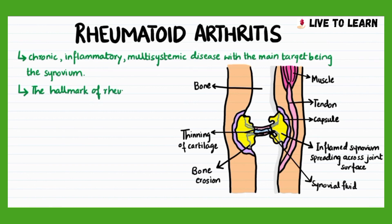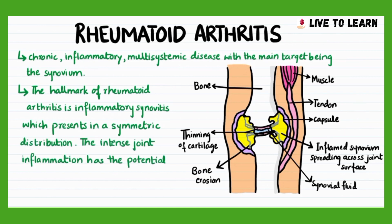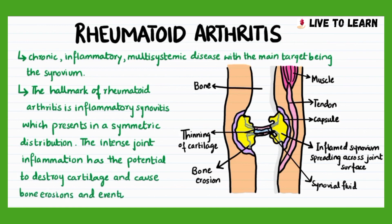The hallmark of rheumatoid arthritis is inflammatory synovitis, which presents in a symmetric distribution. The intense joint inflammation has the potential to destroy cartilage and cause bone erosions, and eventually deform the joint.